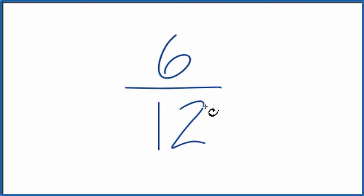When I look at 6 and 12, I'd like to find a common factor. And I know that 6 would go into 6 one time, but it also goes into 12 twice. 6 times 2 is 12.